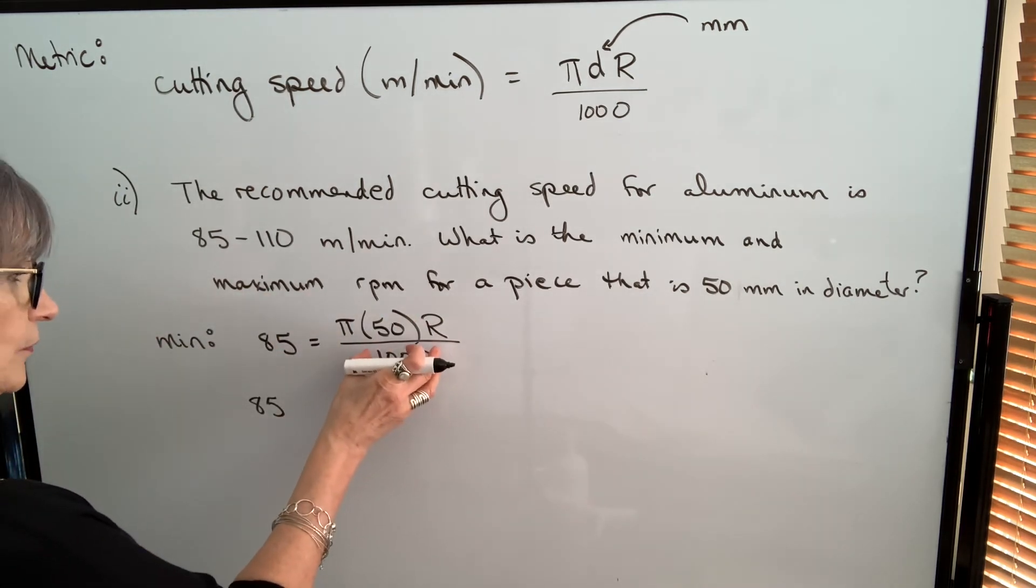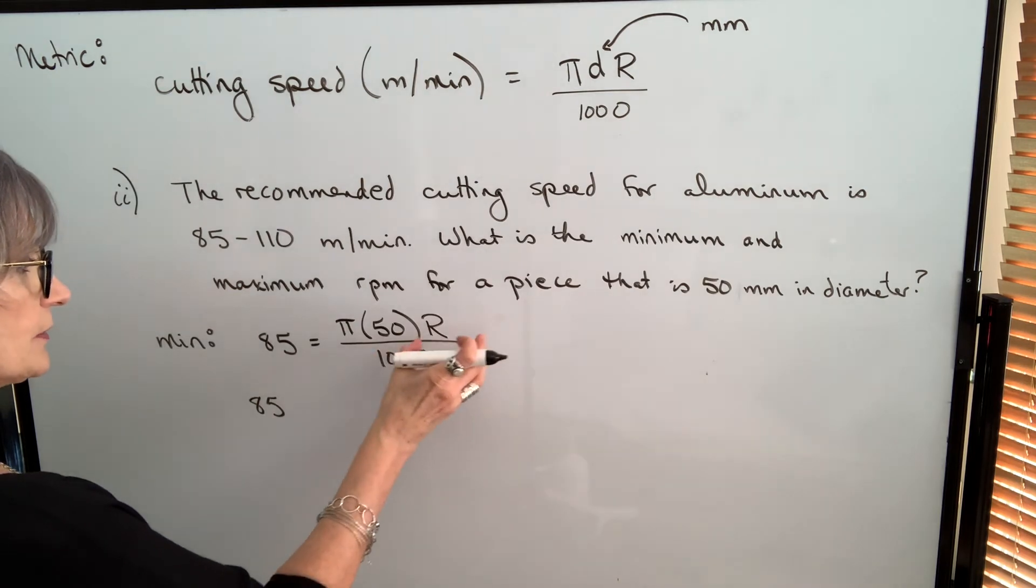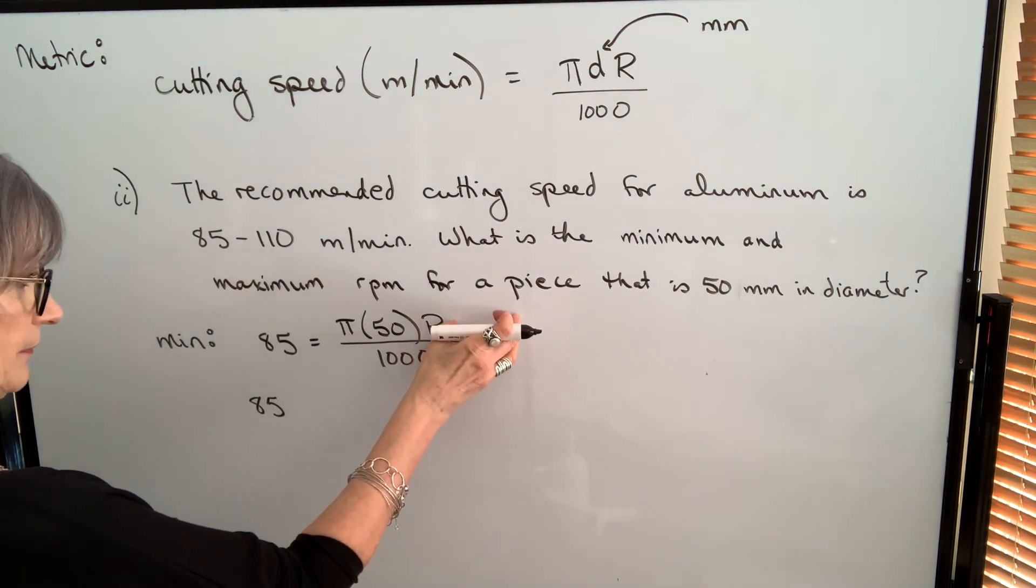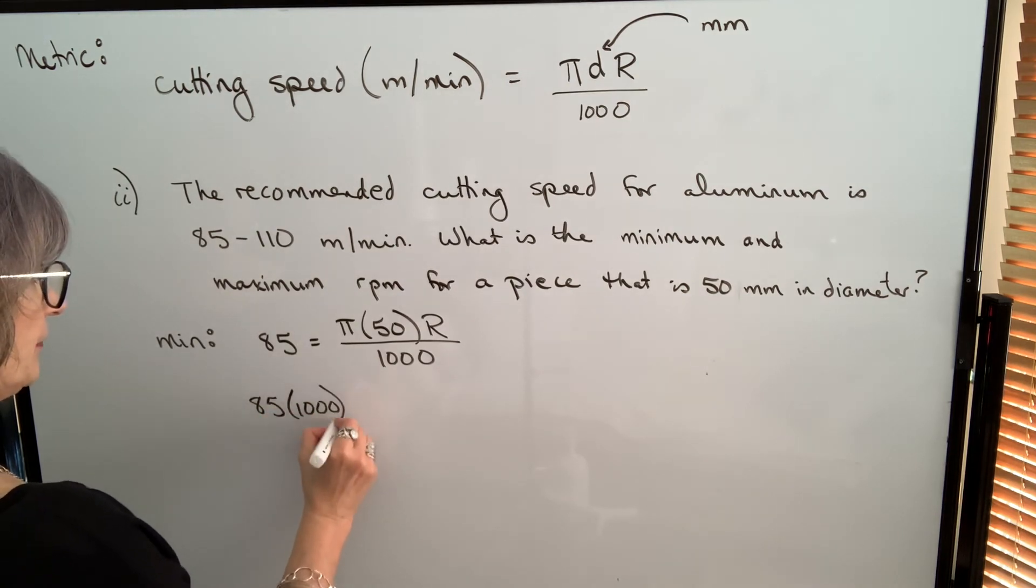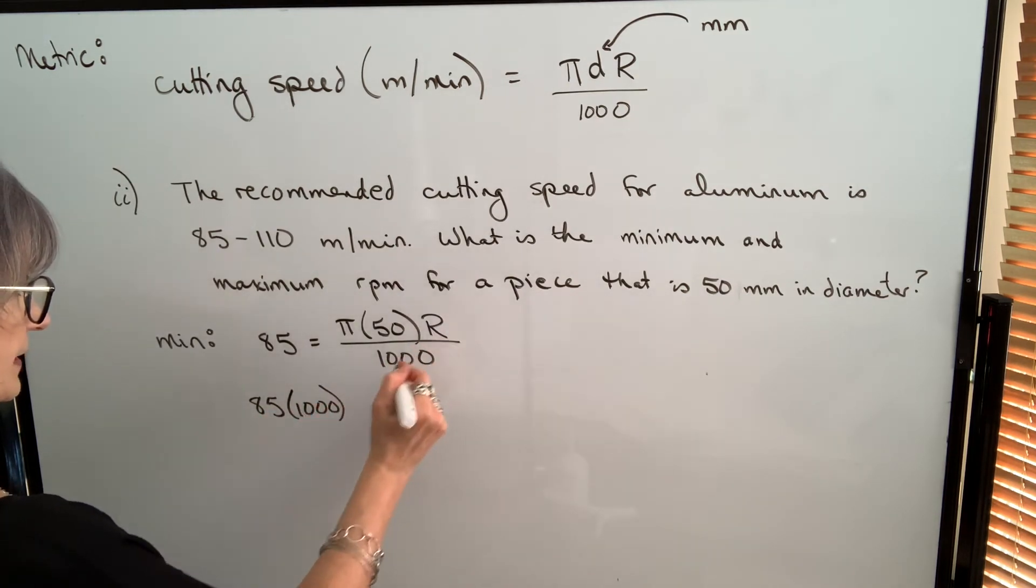In this case, we're dividing by 1,000. So to get rid of it, I'm going to multiply by 1,000. Whatever I do to this side, I have to do to this side. And that eliminates the 1,000 from the right side.